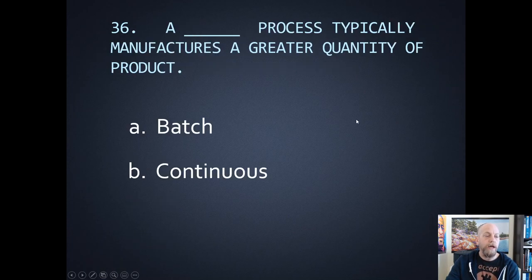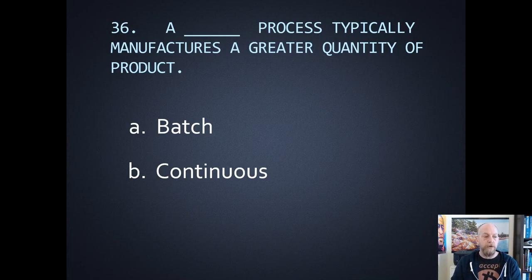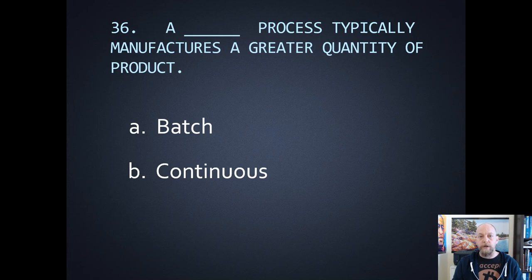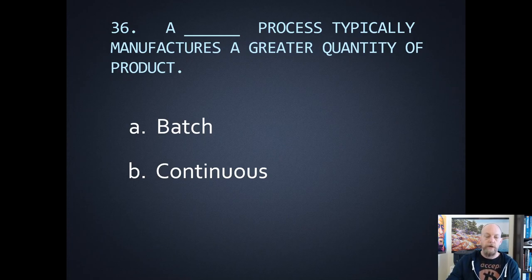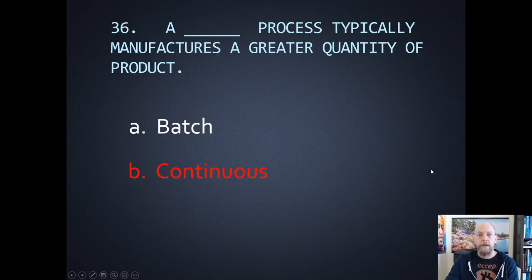Number thirty-six: which process typically manufactures a greater quantity of product? We talked about batch versus continuous. Batch would be like a soft drink factory making a batch of soft drinks. Continuous would be like a glass factory, or a better example — a wastewater treatment plant continuously working 24/7. Obviously the continuous process is working all the time, so that one is going to give us the greater output.